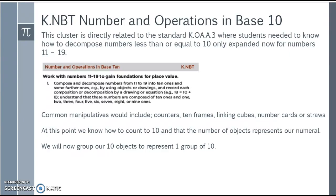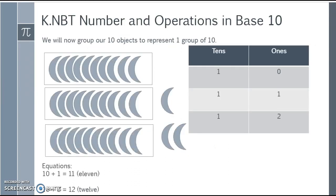At this point we know how to count to 10 and that the number of objects represents our numeral. Now we're going to group our 10 objects to represent one group of 10. Using all kinds of different objects to represent numbers is key and important for students, so that students don't just associate one with a specific object like a flower or a star. Make sure you're using a bunch of different objects so students get the idea that we can count all different types.